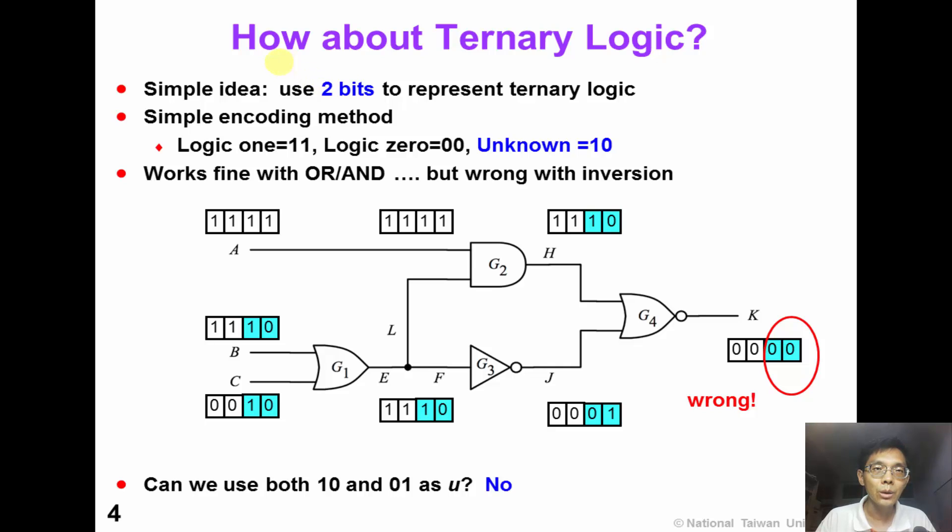In practice, we need to consider more than binary logic. So how about ternary logic? A simple idea is to use two bits to represent a node. For example, we can use 1 1 for logic 1, 0 0 for logic 0, and we add 1 0 for unknown.